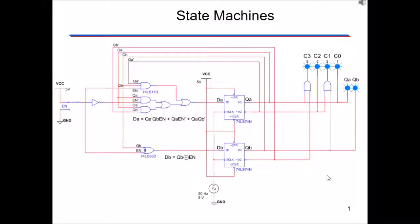One thing to keep in mind is that state machine circuits really have three parts. They have a combinational logic part, which is the input on the left. Combinational logic means AND gates, OR gates, and other basic gates — the output depends on the input. Whatever combination the input is, that determines the output.